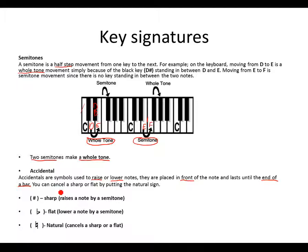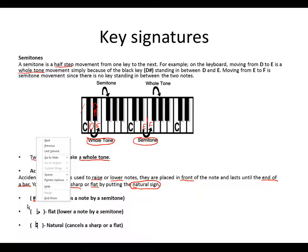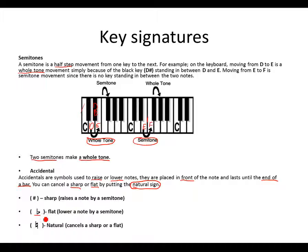You can cancel a sharp or a flat by using the natural sign. Let's take a look at examples. A sharp looks like this — it raises a note by a semitone. This is an example of a flat — it lowers a note by a semitone. This is a natural sign — it cancels a sharp or a flat.